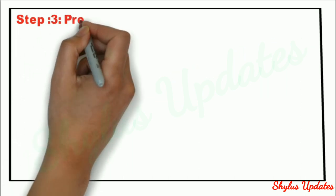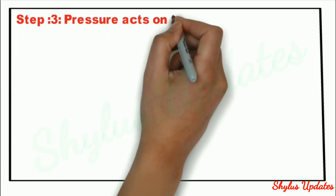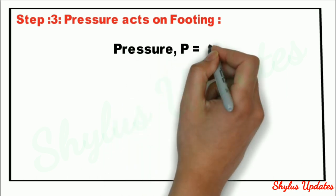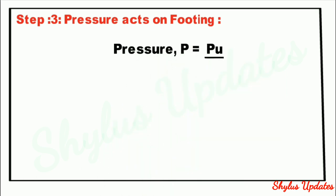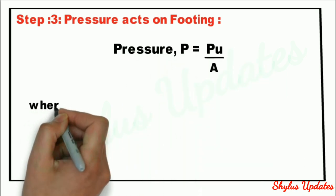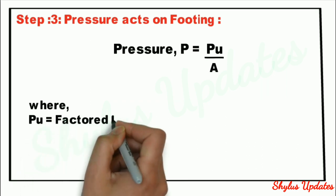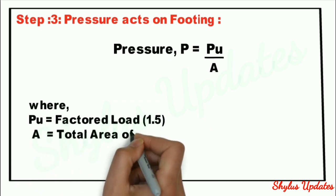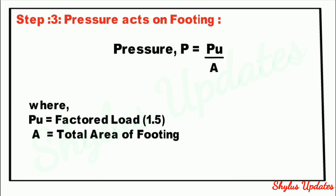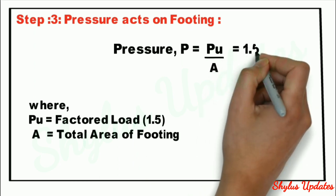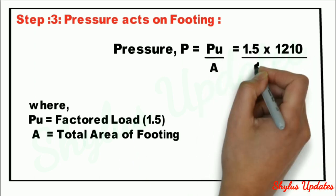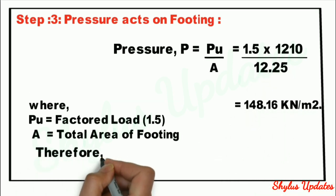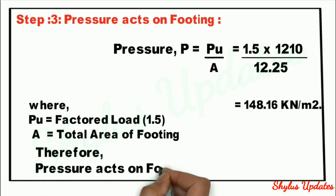Step 3: Pressure acts on footing. Pressure is equal to PU divided by A, where PU is the factored load and A is the total area of footing. When we substitute the values, we get the answer 148.16 kN per m².